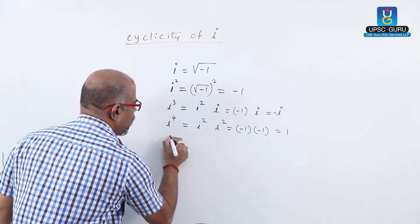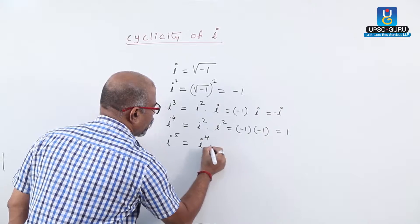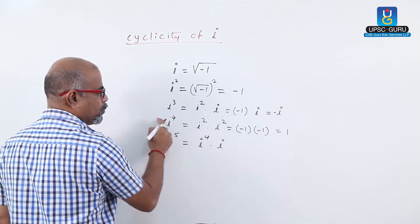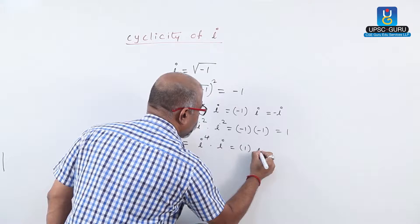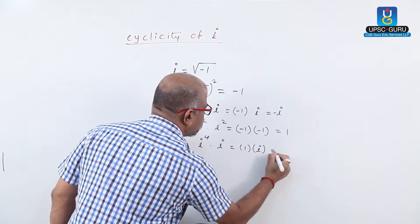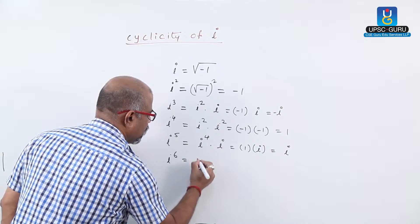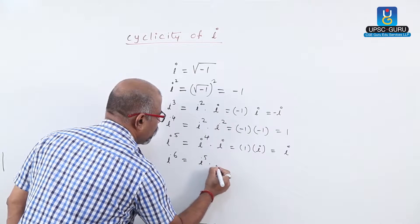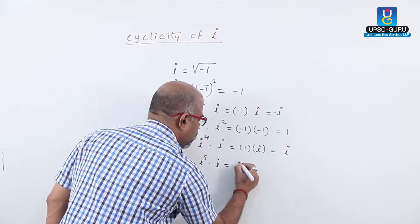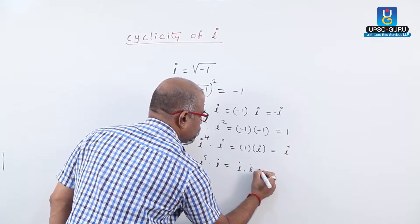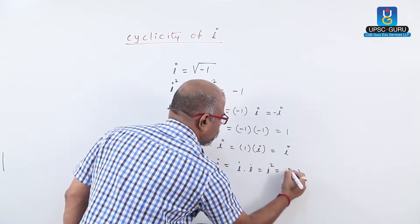i raise to 5 equals to i raise to 4 into i. i raise to 4 value is 1, into i gives us i. i raise to 6 is i raise to 5 into i. i raise to 5 is i into i, that is i square, and value of i square is minus 1.